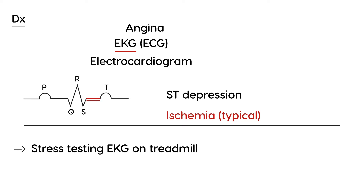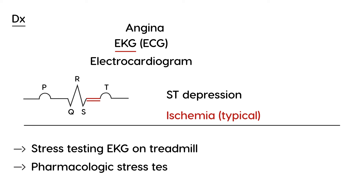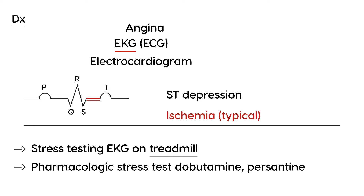What if the person can't exercise? What if the patient is unable to get on a treadmill — perhaps an elderly patient? You can still do a stress test, but it's known as a pharmacologic stress test. A drug is given that will stress the heart instead of treadmill exercise. The two most commonly given medications are dobutamine and persantine, and these are used to stress the heart for people who are unable to walk or run on a treadmill.